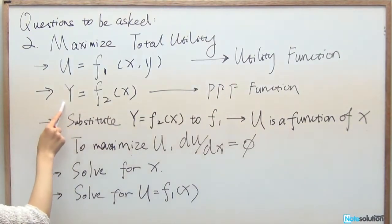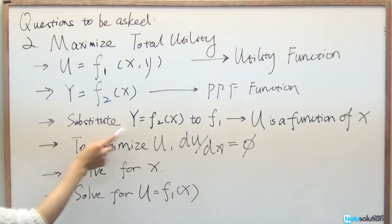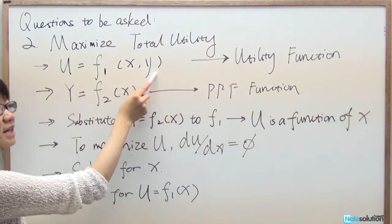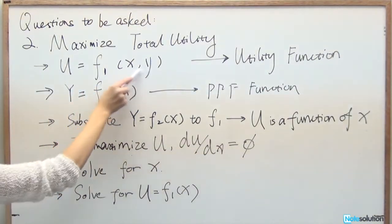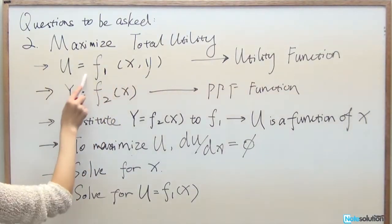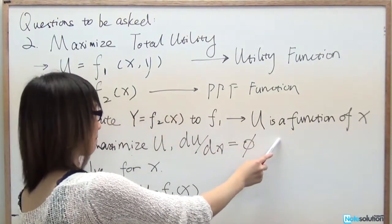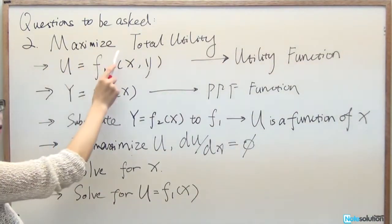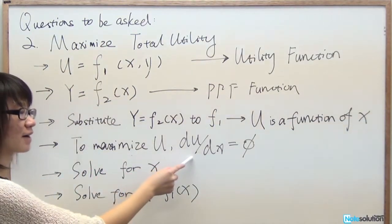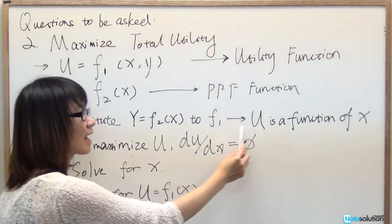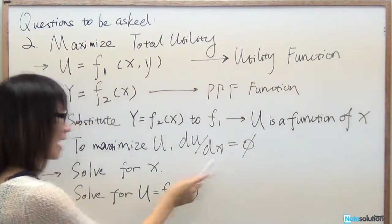The first step is to substitute Y equals F(X) from the PPF function into the total utility function, so that U becomes a function of X only. Then, to maximize, derive dU/dX and set it equal to zero to solve for X.